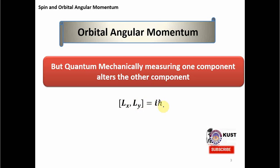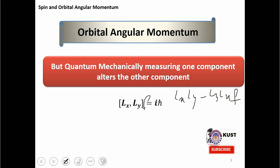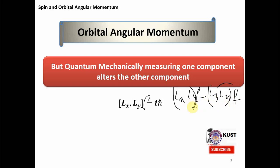The commutator [LX, LY] is equal to iℏ. Opening this commutator gives LX·LY minus LY·LX acting on some function F. If I act with LX first and then LY, and subtract the result of acting with LY first and then LX, that difference is equal to ℏ and is not equal to zero. This means changing the order of measurement of LX and LY makes a difference, and this difference equals ℏ.